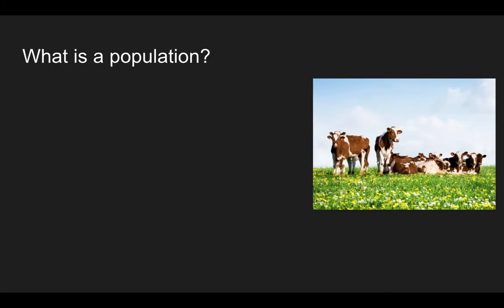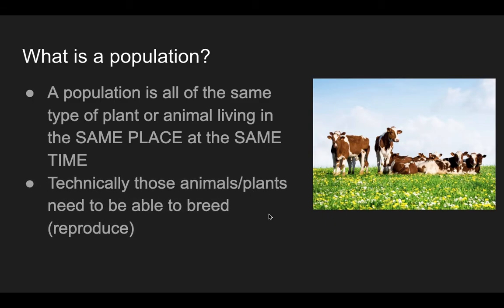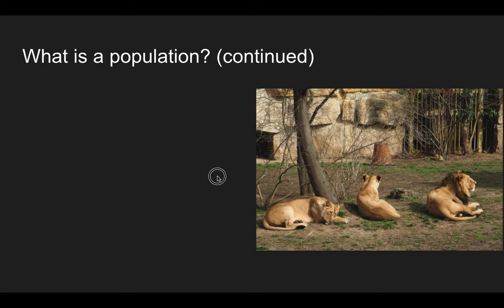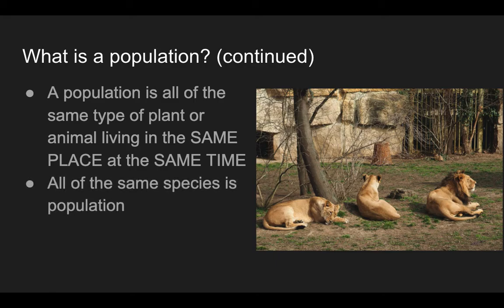So what exactly is a population? A population is the same type of plant or animal living in the same place at the same time. We see a herd of cows. Technically, these animals or plants need to be able to breed or reproduce in order to be considered a population, which would make them a single species. A population is all the same type of plant or animal, living in the same place at the same time, all of the same species.